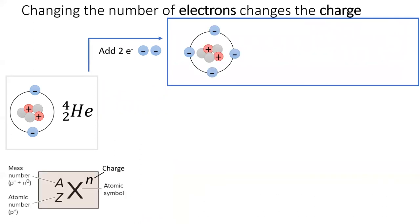First, let's add two electrons. Adding two electrons to a neutral helium atom gives the atom a negative 2 charge.